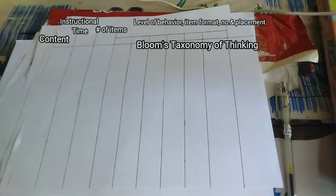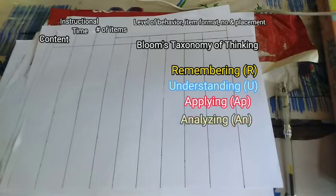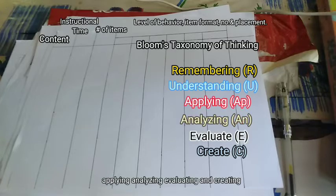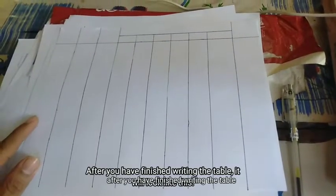The table also includes Bloom's taxonomy of thinking which is remembering, understanding, applying, analyzing, evaluating, and creating. But when we have finished writing the table, it will look like this.